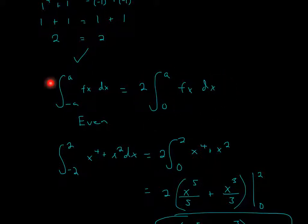So our problem was 2 to negative 2, and then x to the fourth plus x squared dx. So this will become 2 times the integral from 0 to 2, and x fourth plus x squared dx.